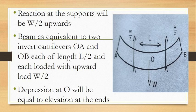We can consider this beam as equivalent to two inverted cantilevers. Think that you have made a cut at the middle point through O — you will get two pieces: OA and OB. We can consider this beam to be equivalent to two inverted cantilevers OA and OB, each of length L by 2, and each loaded with an upward load W by 2.